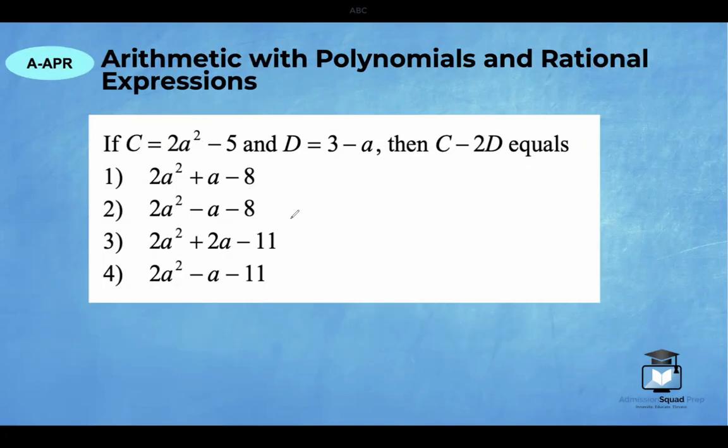The second content area we need to prioritize is arithmetic with polynomials and rational expressions. I've pulled this problem to serve as an example of what you can expect on the new Algebra 1 Regents. Let's get started. If C equals 2a² minus 5 and D equals 3 minus a, then C minus 2D equals and we need to identify the answer. So I'm going to start off by just writing down C minus 2D and I notice that I simply need to replace C with 2a² minus 5 and D with 3 minus a. My next step is to distribute the negative 2.